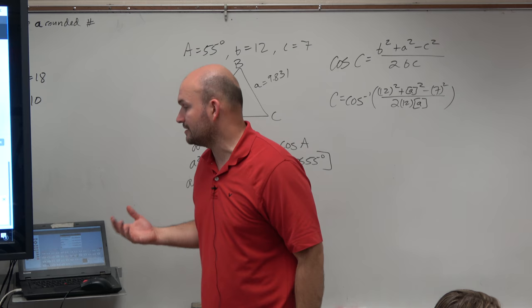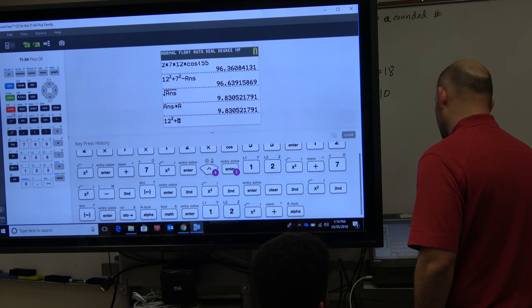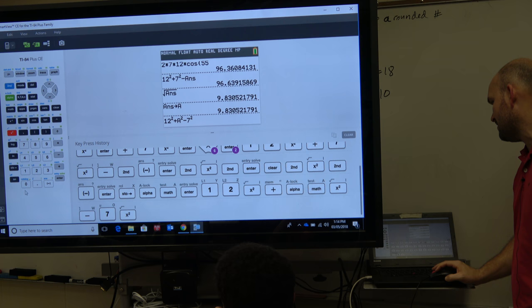So to do that, I'm going to do 12 squared. So I'll type in 12 squared, even though I know that's 144, plus alpha a squared minus 7 squared. Now your calculator, again, is following the rule of order of operations. It is going from left to right, so I will calculate that correctly. OK, so I get 191.